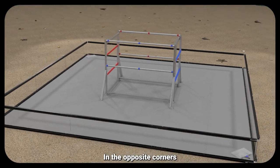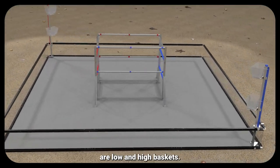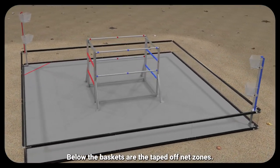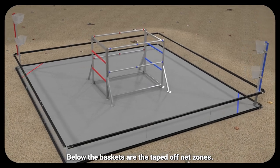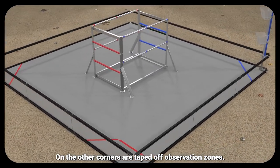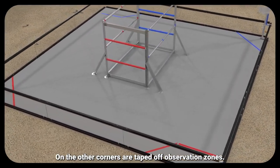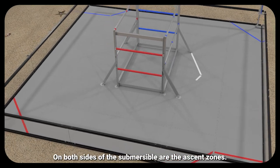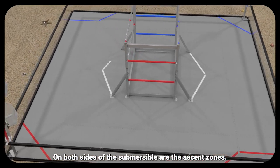In opposite corners are low and high baskets. Below the baskets are the taped-off net zones. On the other corners are taped-off observation zones. On both sides of the submersible are the ascent zones.